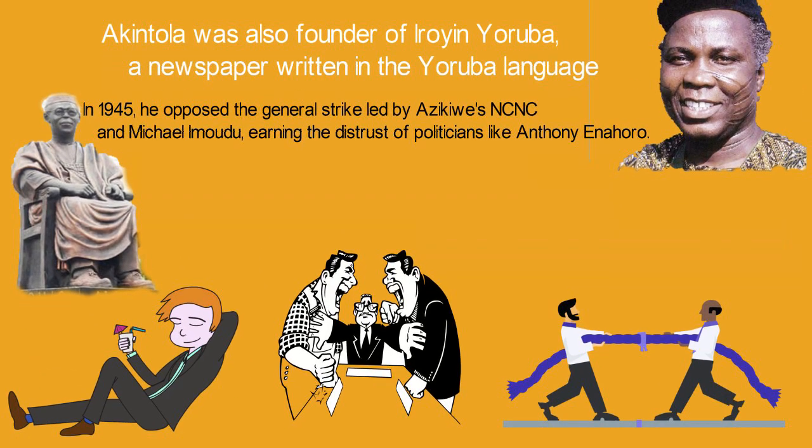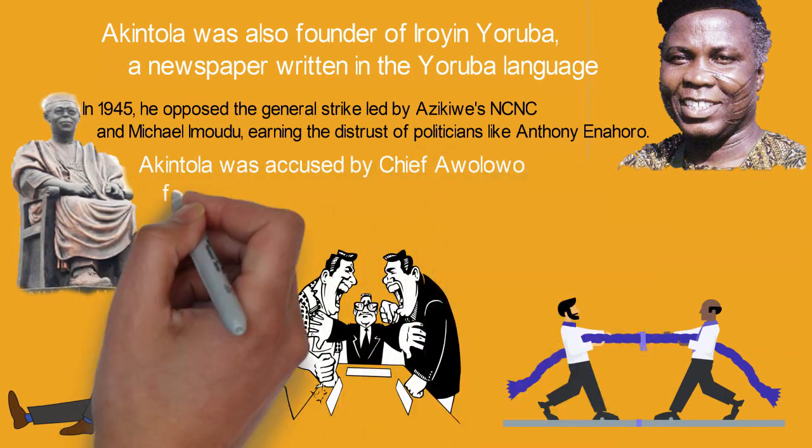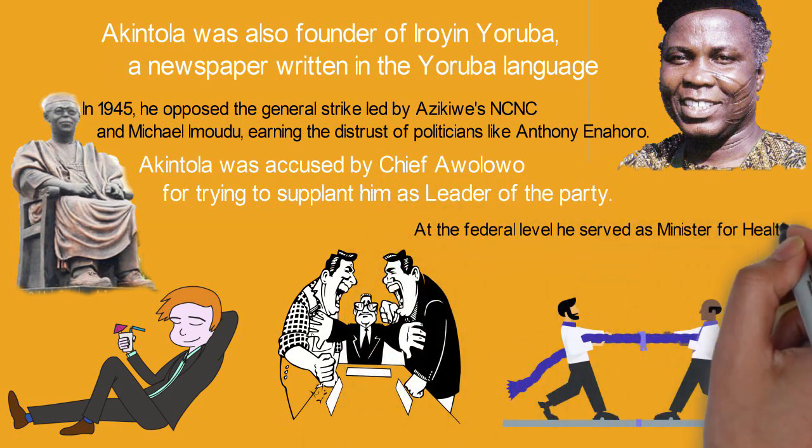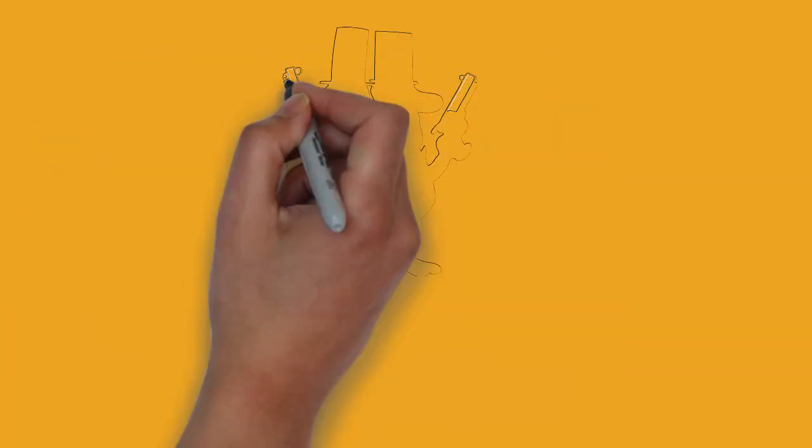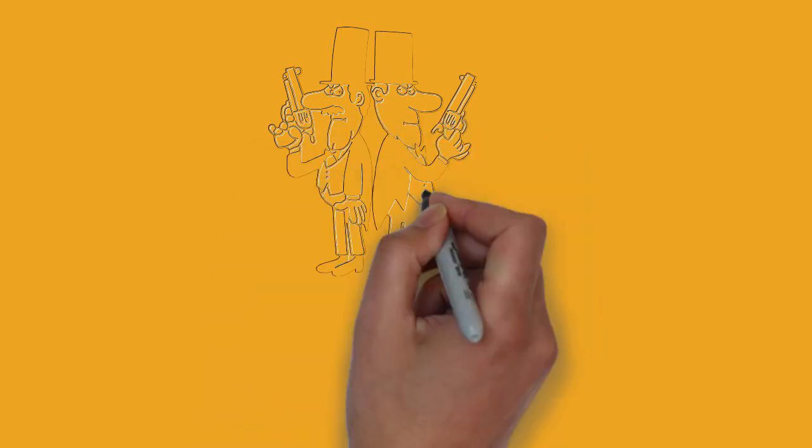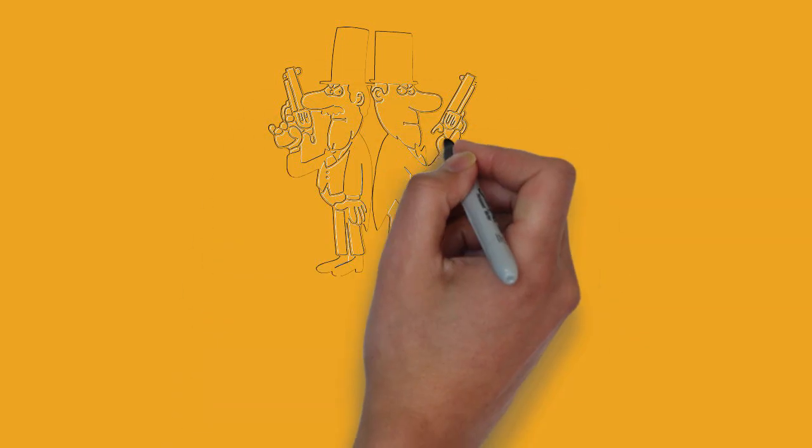In the general election of 1965, Akintola won his position as Premier, not as member of the Action Group Party, but as the leader of a newly formed party called Nigerian National Democratic Party NNDP, which was in alliance with the Northern People's Congress NPC, the party that then controlled the federal government.